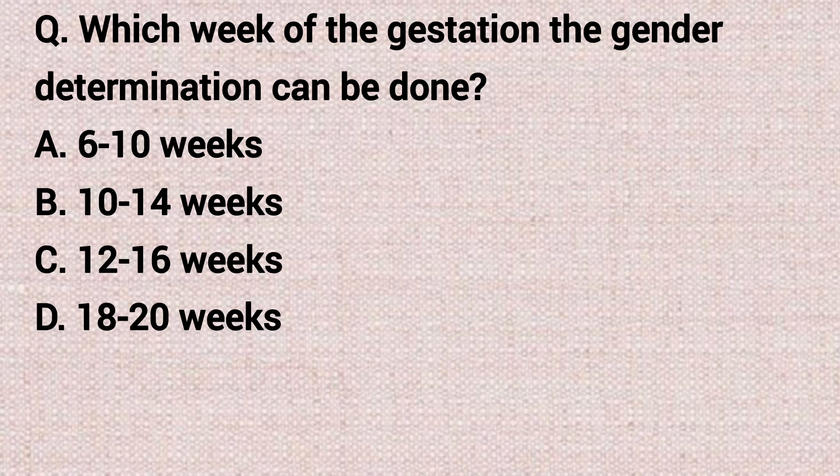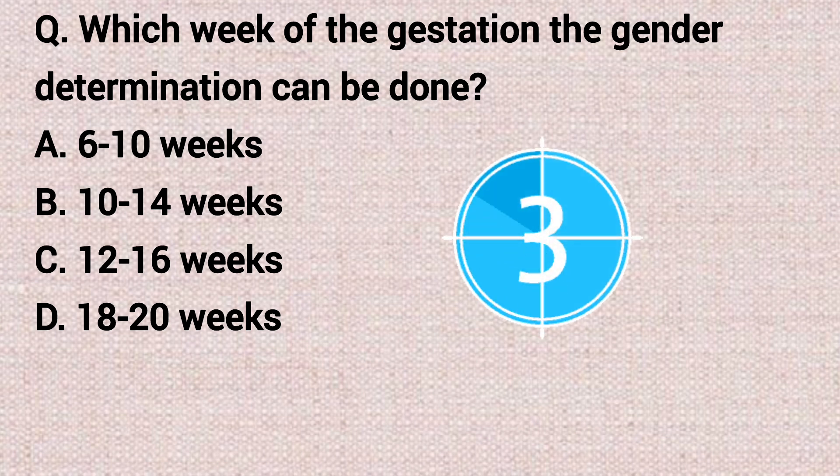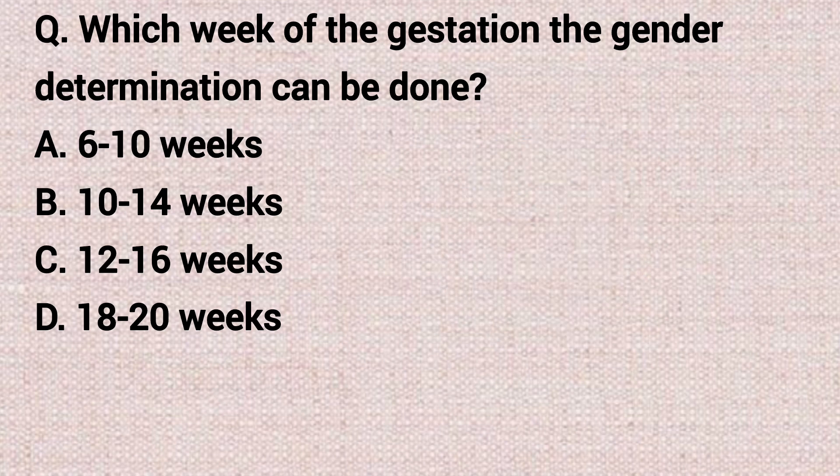The next question: at which week of gestation can gender determination be done? Option A: six to ten weeks. Option B: ten to fourteen weeks. Option C: twelve to sixteen weeks. Option D: eighteen to twenty weeks. The correct answer is option D, eighteen to twenty weeks.